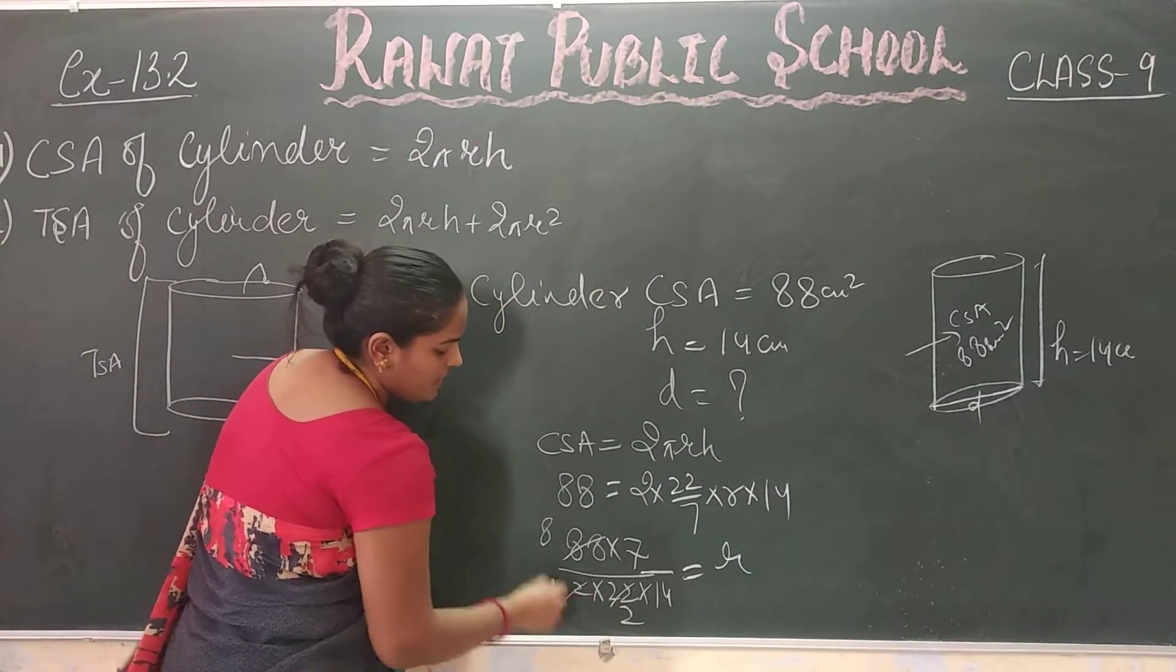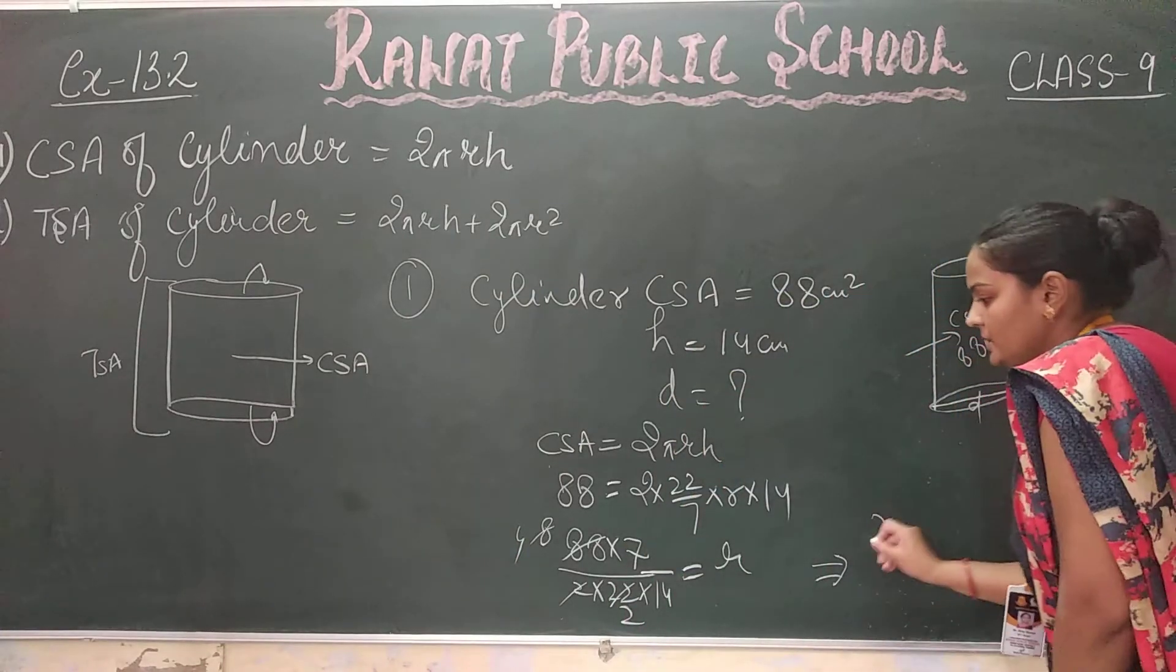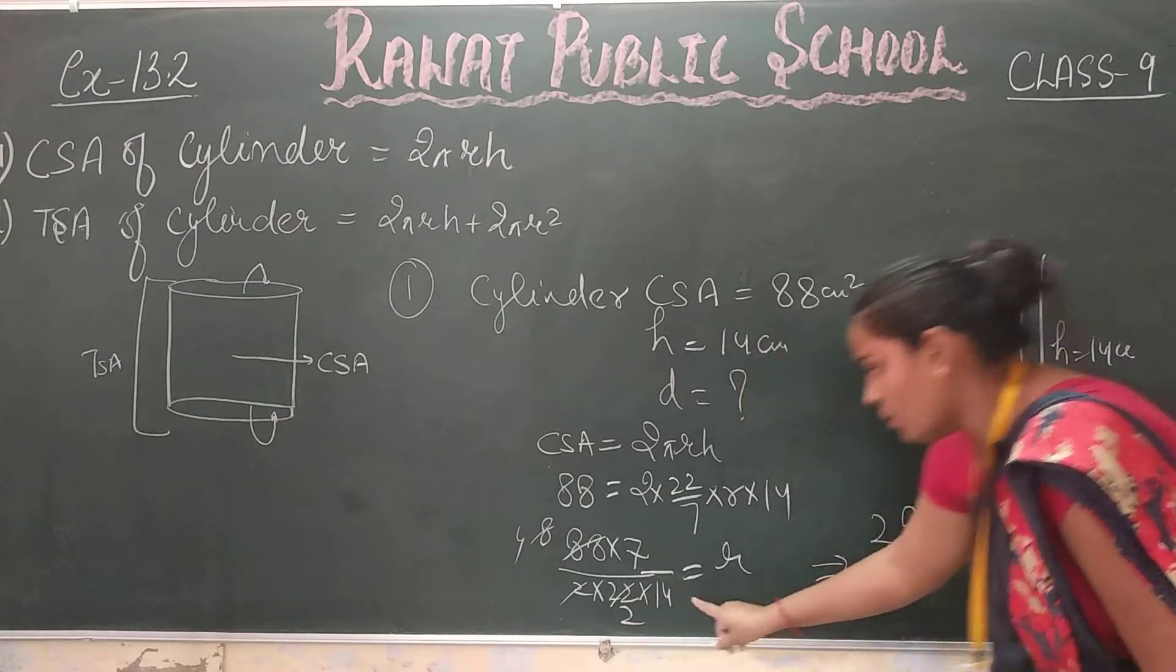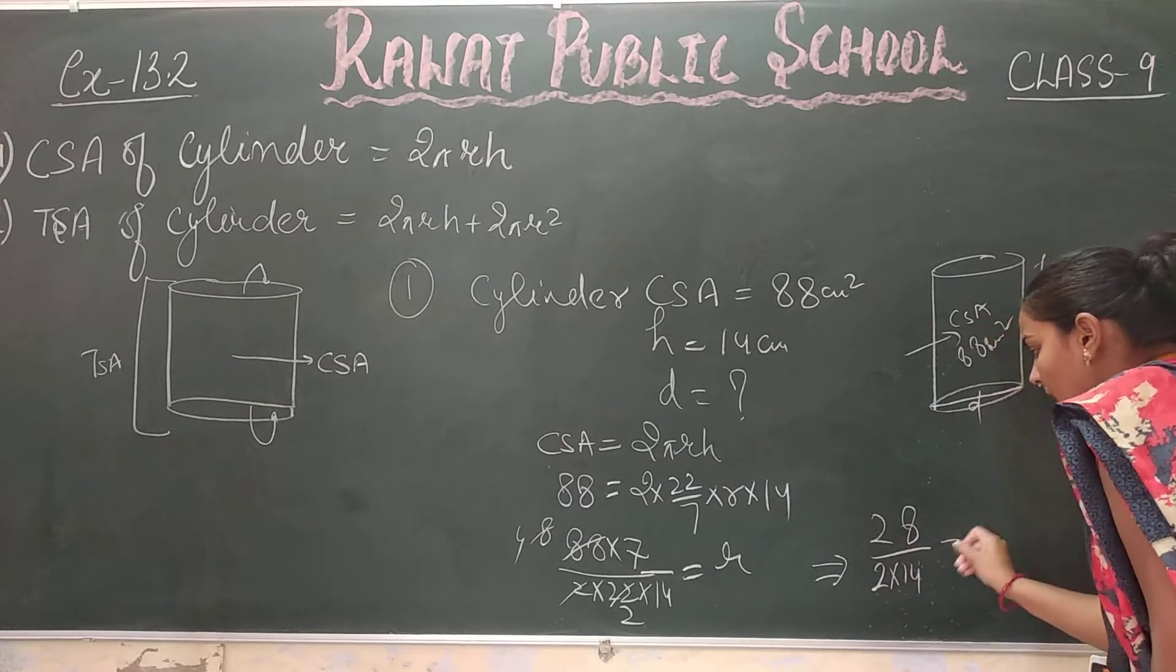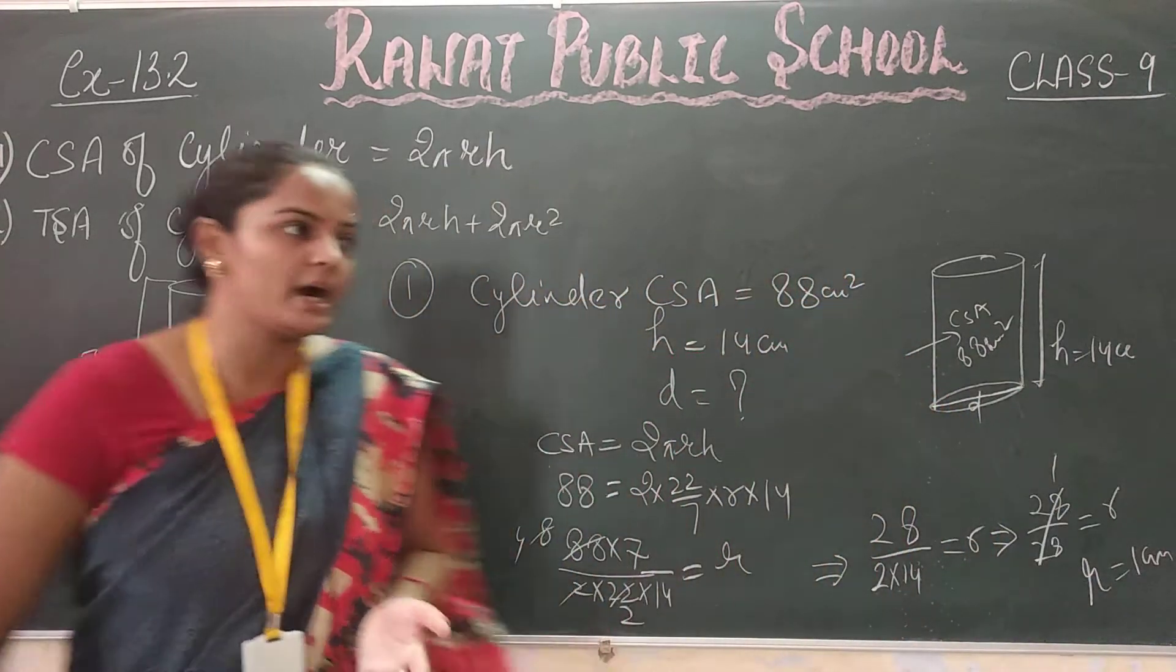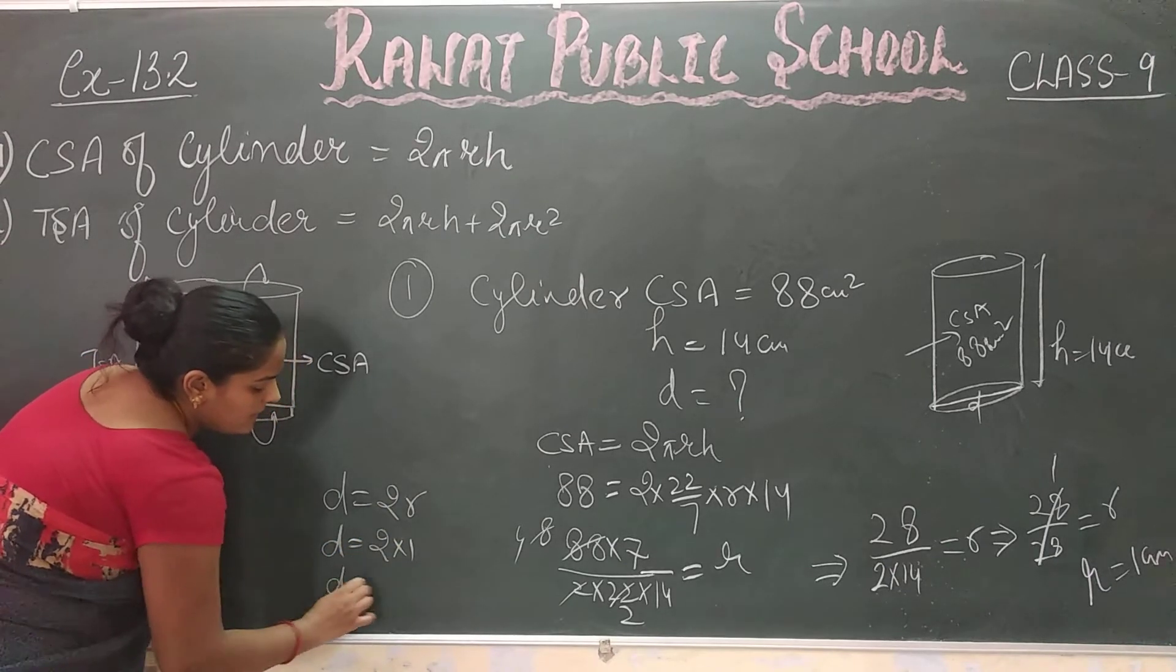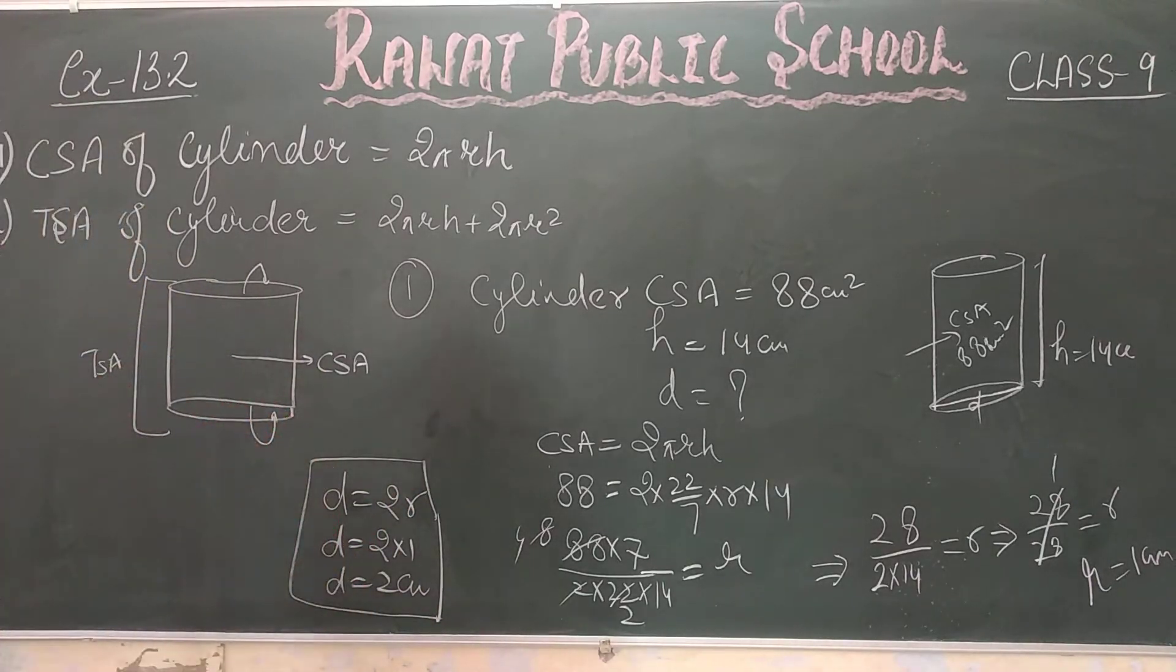Then we can calculate to get 28 upon 4 equals r. After simplification, r is equal to 1 cm. Since D equals 2r, then D equals 2 times 1, so D equals 2 cm. This is the answer for the diameter of the cylinder.